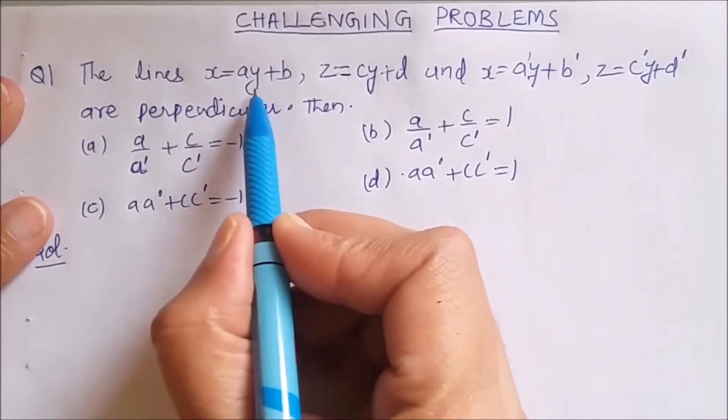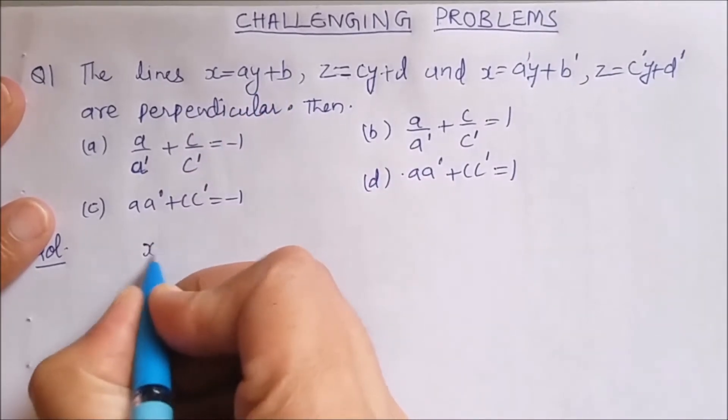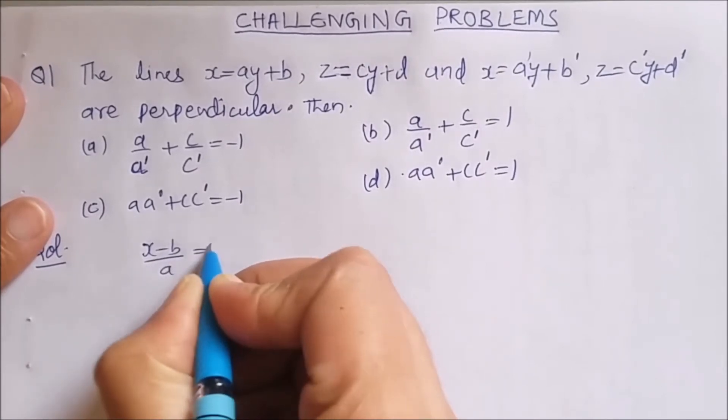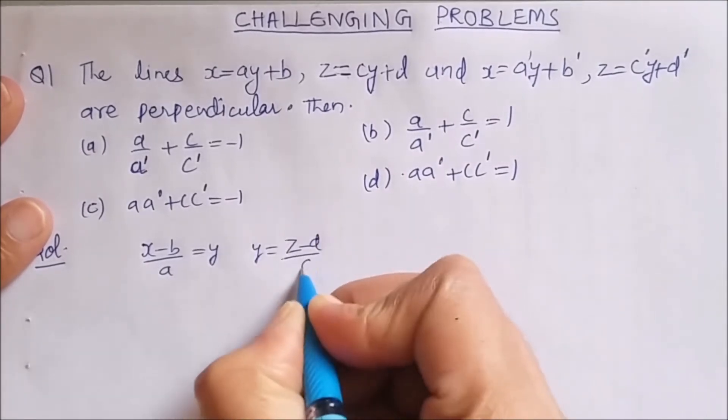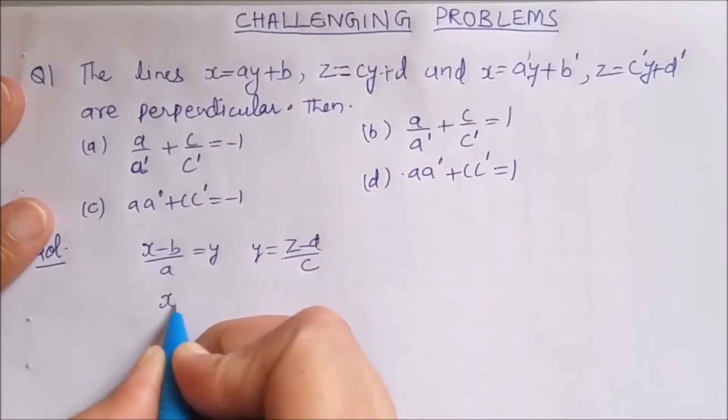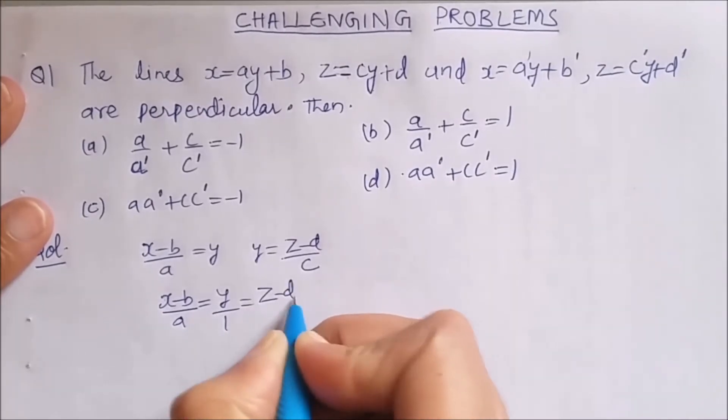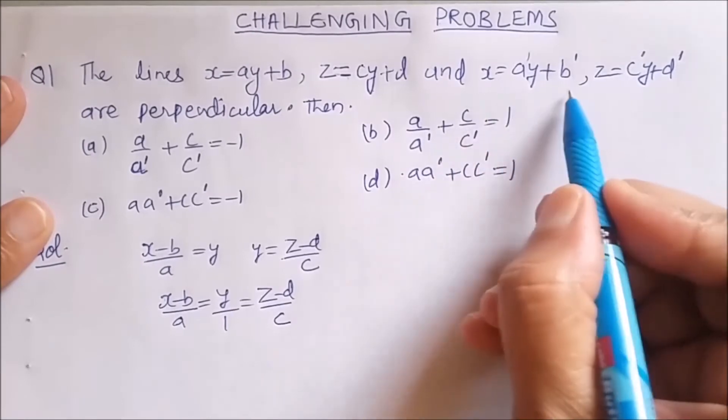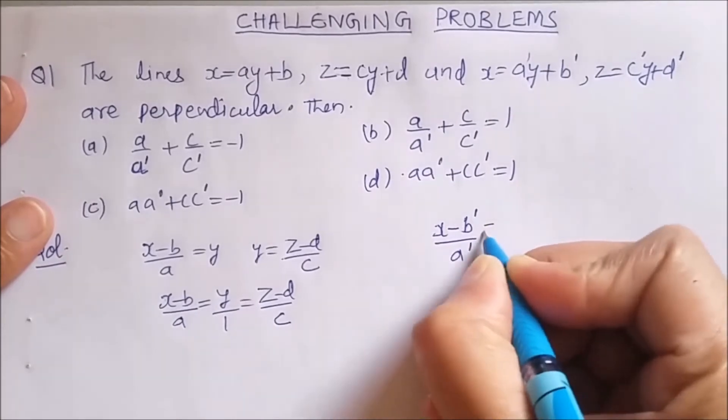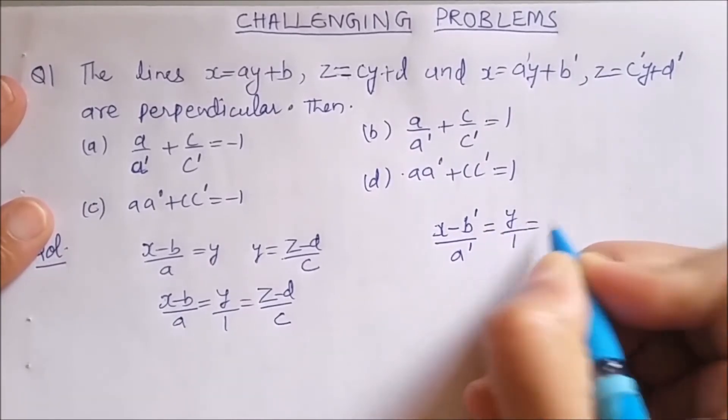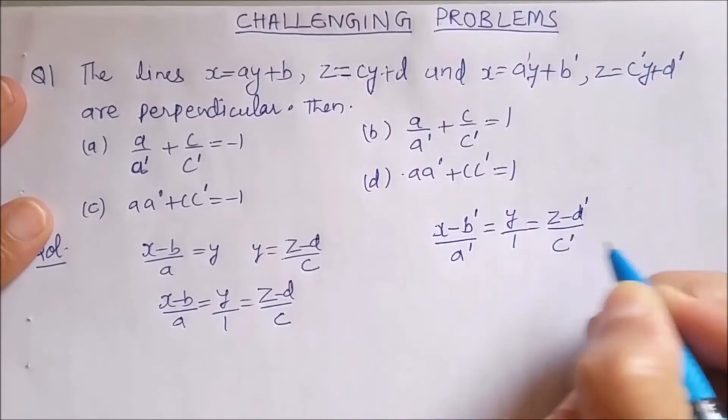From this we can see that y is common in these two. So we will solve it for y. Y will be equal to (x-b)/a. So (x-b)/a equals y and from this y will be (z-d)/c. So we can write the equation for this line as (x-b)/a = y/1 = (z-d)/c. Similarly, for this line we can write (x-b')/a' = y/1 = (z-d')/c'.